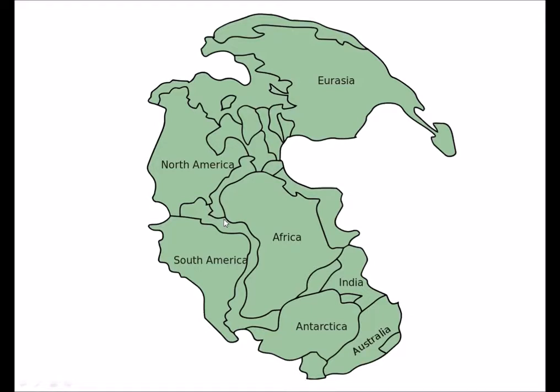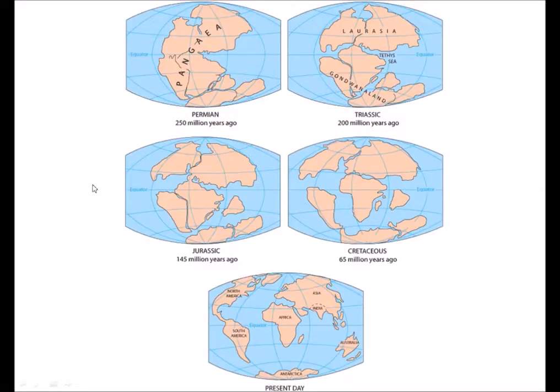All of the continents that we know today were united and forming Pangaea. But by the end of the Triassic period, the supercontinent started breaking and this resulted in two supercontinents. One is Laurasia and second is Gondwana. Here we can see the Laurasia and the Gondwana land. The Laurasia comprises Eurasia and North America, while the Gondwana land comprises South America, Africa, Madagascar, India, Antarctica and Australia.